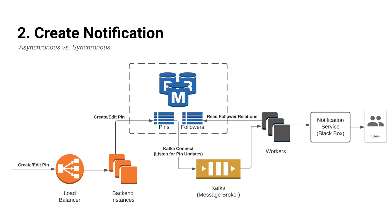Every request to create or edit pins would be done via calling an endpoint in the backend server. The backend server would persist the update in the database. After this update operation, we can choose to create notifications either asynchronously or synchronously. The synchronous approach is: after persisting to the database, the backend server would explicitly send notifications to relevant followers before sending the success response back to the user. This is not ideal because it would significantly increase the latency on write operations.